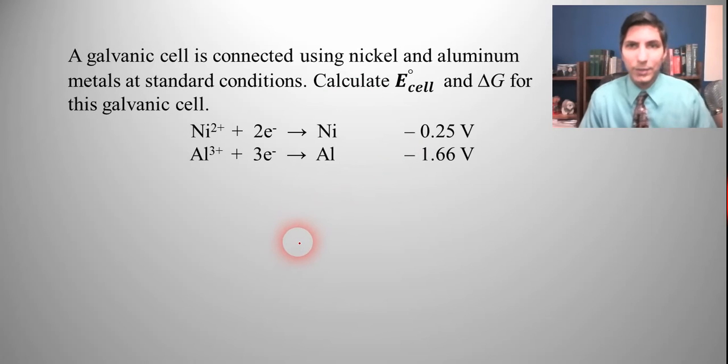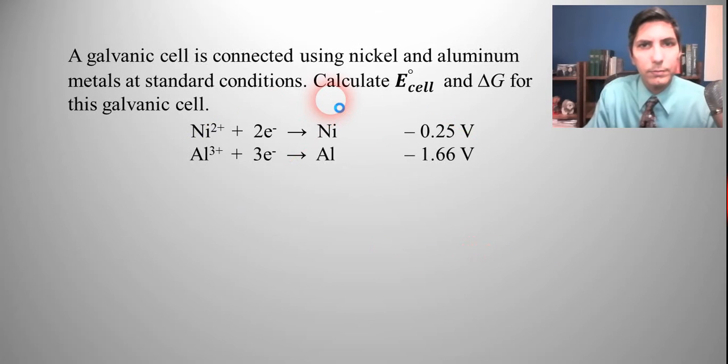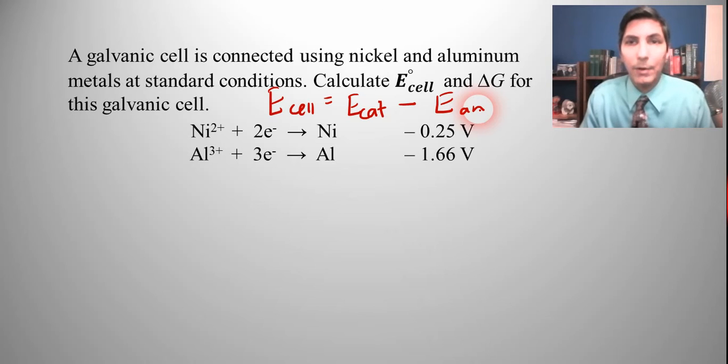So remember, like we said in the last video, we're going to have to use this equation right here where E cell equals E of the cathode minus E of the anode. So it's cathode minus anode. So I'm going to write it both ways. And I always choose the one that gives me a positive E cell because E cell's got to be positive.